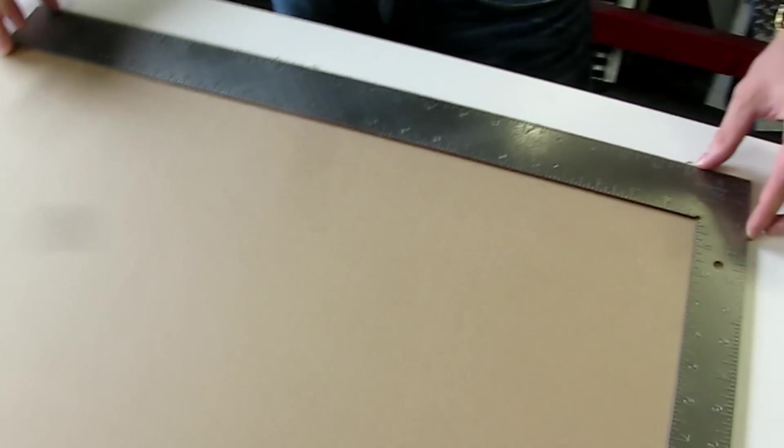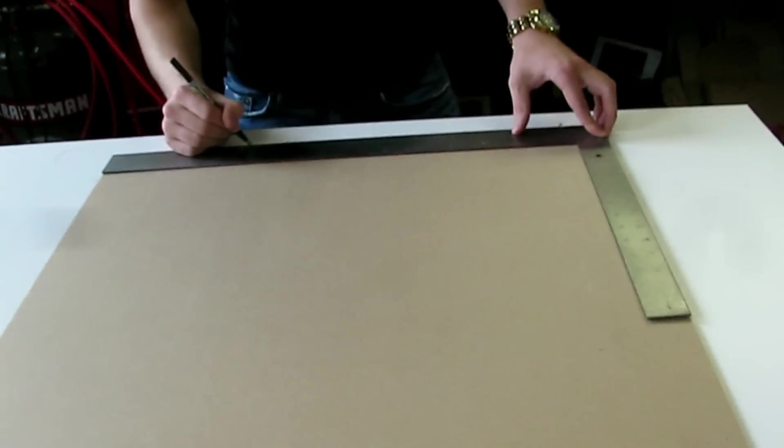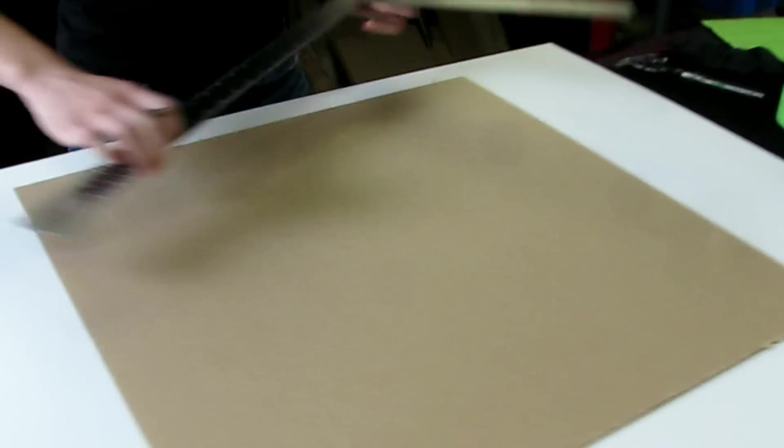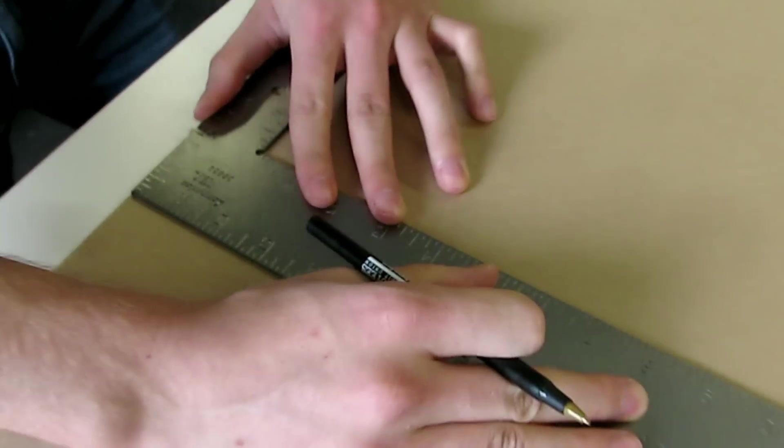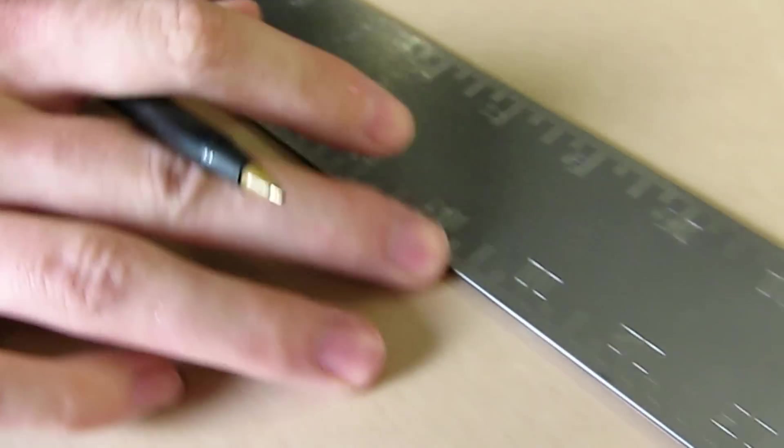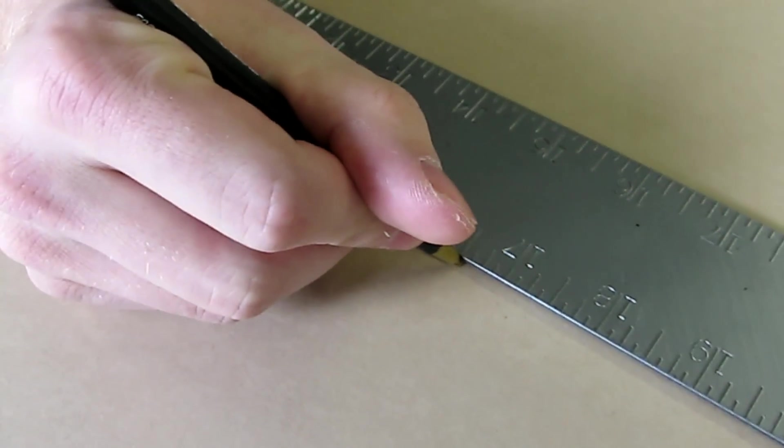Next step is to cut my acrylic window. I'm using this square edge. We need to cut a 17 by 16 and a half window. So I'm going to mark off 17 inches right here and then go up from there to 16 and a half.